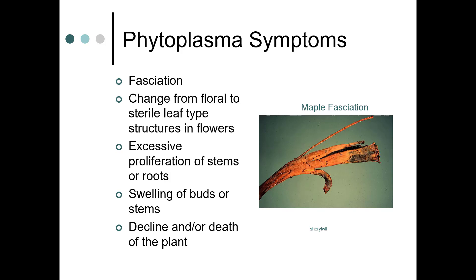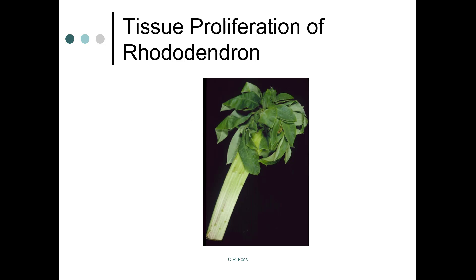Other symptoms include fasciation, which you can see here on maple. You have a change from floral to sterile leaf-type structures in flowers. You may see an excessive proliferation of stems and/or roots, swelling of buds or stems, and decline or death of the plant. Here's tissue proliferation in rhododendron — you wouldn't even know this is a rhododendron.